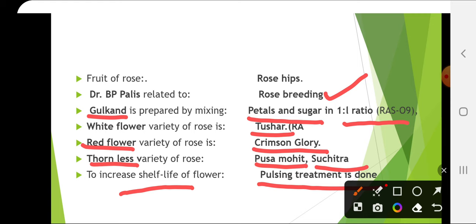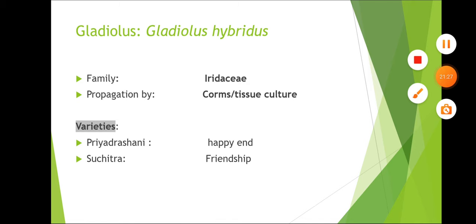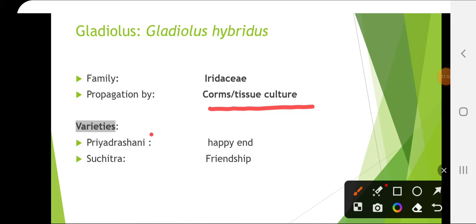Next is Gladiolus hybridus, belonging to the family Iridaceae. Propagation is by corms or tissue culture. Varieties include Priyadarshani, Suchitra, Happy End and Friendship.